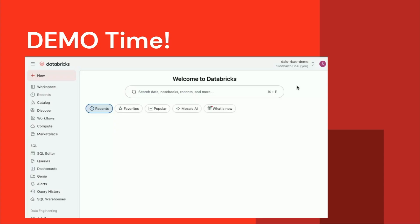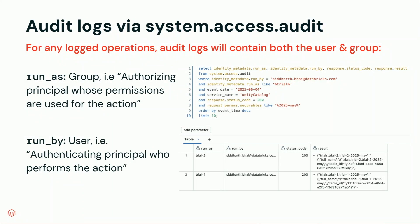Did that seem interesting? I know a lot of you are security-focused, so I want to make sure we cover the auditing piece well. There's something new in this audit event — there is a 'run as' and a 'run by'. The 'run by' reflects my username because I was conducting the queries as a user. But look at 'run as' — there is trial two and trial one. This cements the notion that you're authorizing to Unity Catalog with that specific trial. Now you can conduct analyses such as what all things a user accessed, or which specific context was used when access occurred.